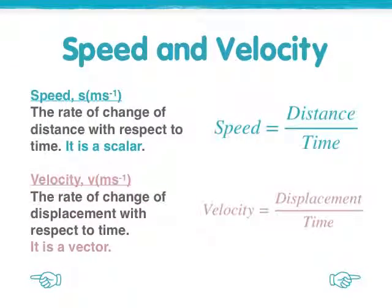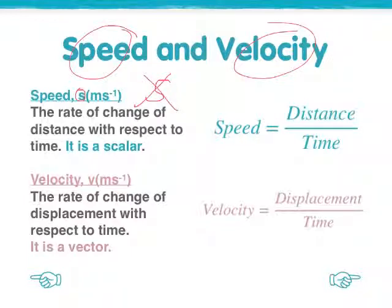Similarly, we have speed and velocity. Speed is with a small s, not to be confused with displacement, but to be honest, we never use them in the same context. Speed is a scalar, with units of metres per second. And velocity, symbol v, is a vector.